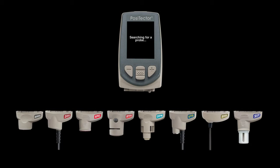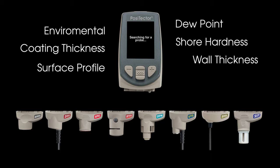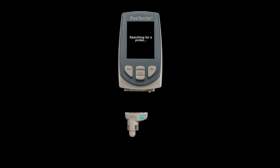Positector DPM probes connect to the award-winning Positector platform, allowing a single gauge body to accept environmental, coating thickness, surface profile, dew point, shore hardness, wall thickness, and soluble salt probes. They are an ideal addition to a Positector inspection kit.